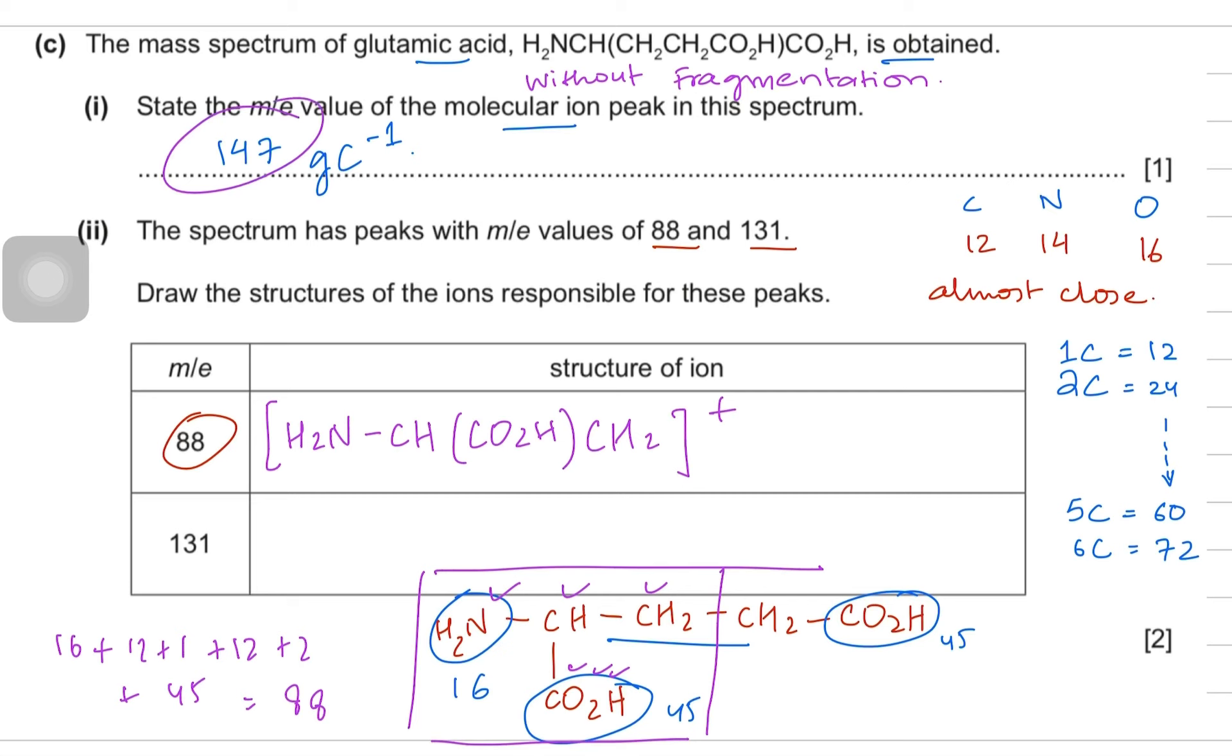For 131 you can see that the total mass was 147 but you need to find 131, so just subtract 131 from 147 to find out what is lost. 16 units have been lost. If 16 units have been lost, 16 units are normally because of NH2, so everything apart from NH2 becomes a part of your molecular ion.